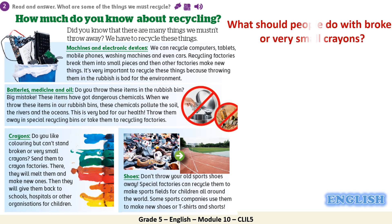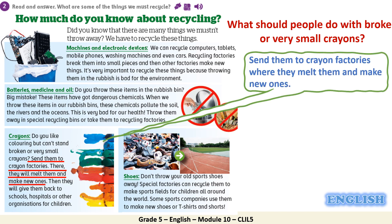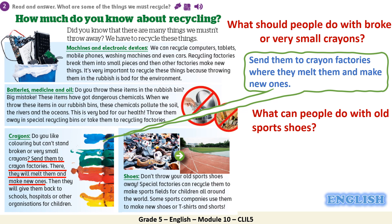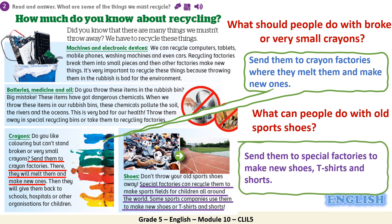What about crayons? What should people do with their broken or very small crayons? We should send them to crayon factories where they melt them and make new ones for children to paint all over the world. What can people do with old sports shoes? People should send them to special factories to make new shoes, t-shirts, and shorts.